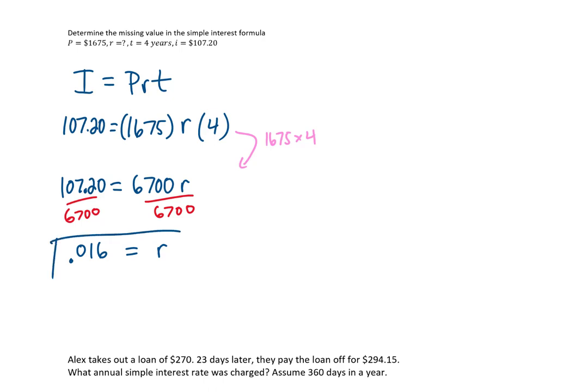Now that might be the answer you're looking for, but you also might need to write that as a percent. Moving the decimal place two times to the right, that is 1.6% annually, per year. We knew that rate was per year because our time up here was given in years.